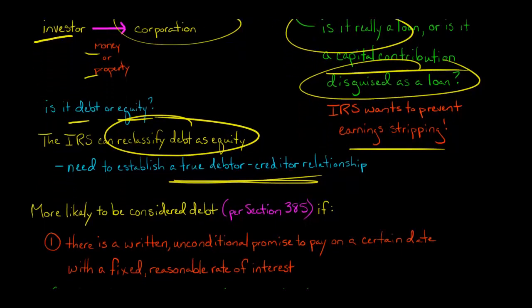The first factor is: is there a written unconditional promise to pay on a certain date with a fixed reasonable rate of interest? If you say it's a loan with 0.001% interest, that doesn't sound reasonable. I don't know if this is really a loan.